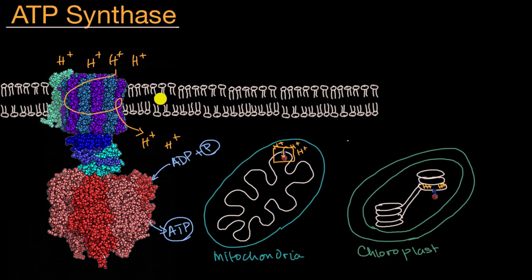So in the case of a mitochondria, this would be the inner membrane. Right over here would be the intermembrane space between the inner and the outer membrane.